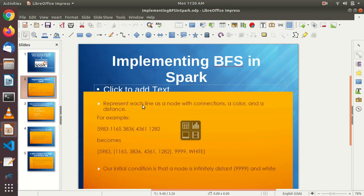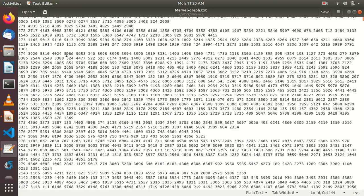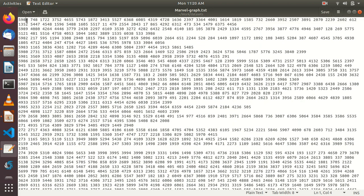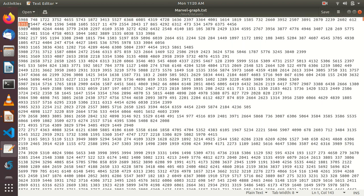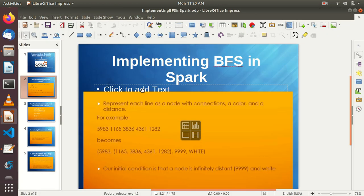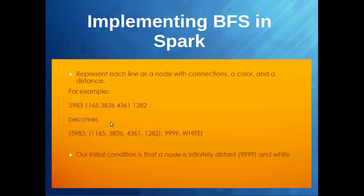As you already know, this is the data representation of our superhero social graph. Each hero ID has connections to other hero IDs. We are going to implement BFS in Spark, where each line represents a node with connections, a color, and a distance. As I showed in my last example, when we explore a node, we further explore that particular node's connections.